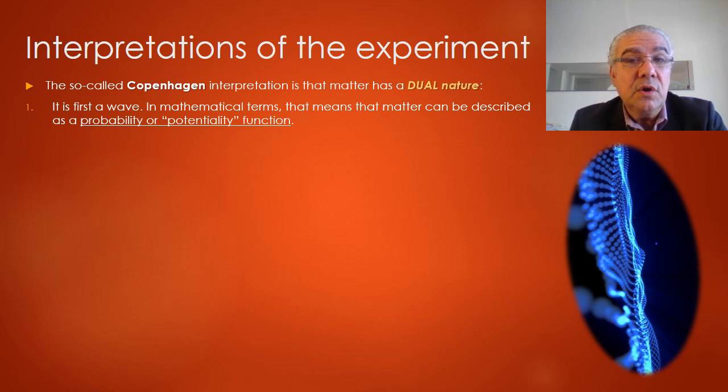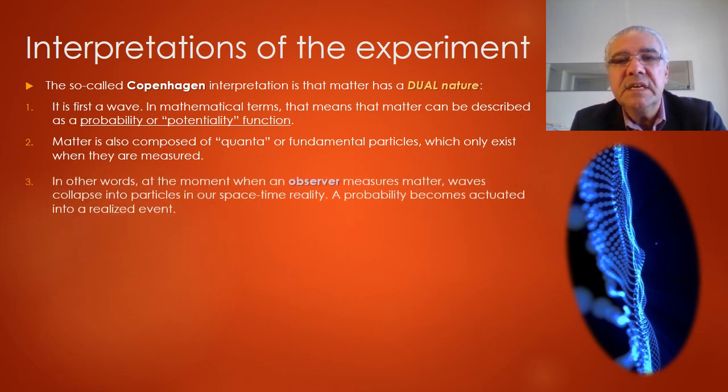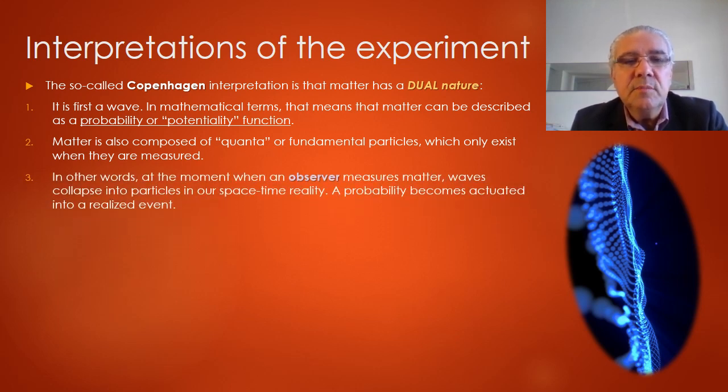First, matter is a wave. What does it mean? It means that matter can be described as a potentiality or probability function. And in a second state, matter is also composed of quanta or fundamental particles, which only exist once they are measured. And that's a very important point. In other words, at the moment when an observer measures matter, waves of probability collapse into an actualized event or an actualized particle.